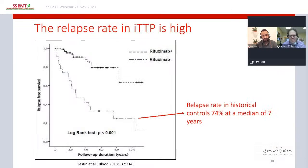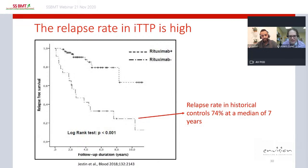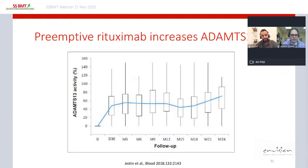The natural history of immune TTP includes a very high relapse rate. Data from the French cohort shows that in patients who recovered from immune TTP but did not receive rituximab, the relapse rate was 74% at seven years. If we give rituximab to patients who have developed recurrent severe ADAMTS13 deficiency but remained in clinical remission, it results in a rise of ADAMTS13 activity into the normal range.